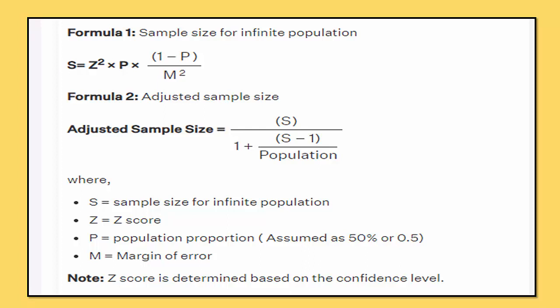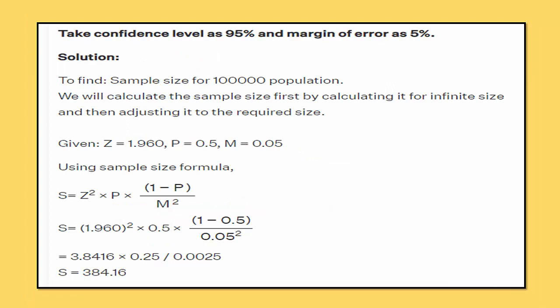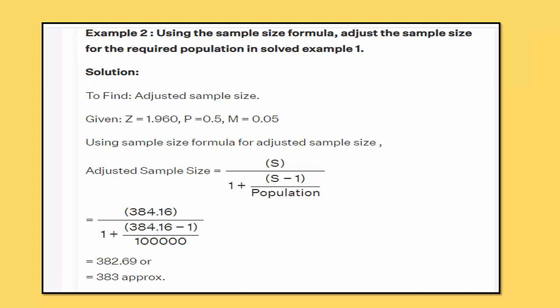In the second example, confidence level is 95%, margin of error is 5%, and Z = 1.960. Initially the population is unknown, and we use 1 lakh (100,000) as the population for the adjusted sample size. Substituting all values gives an initial sample size of 384.16. Using the adjusted formula with N = 1,00,000: adjusted sample = 384.16 / (1 + (384.16 − 1) / 100000), giving approximately 382.69, which rounds to 383 samples.